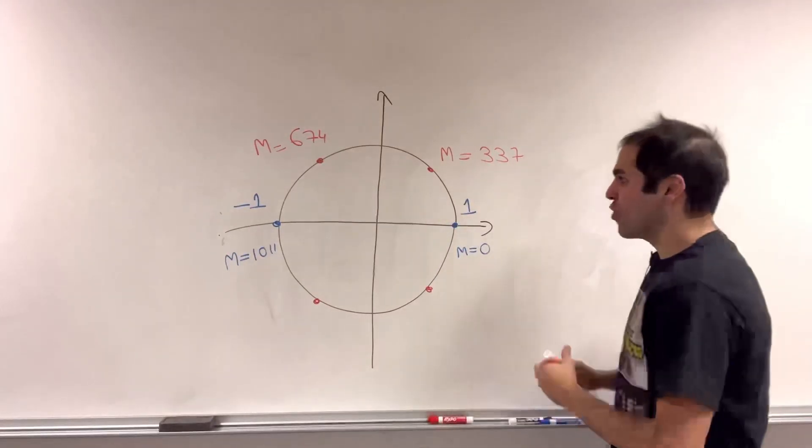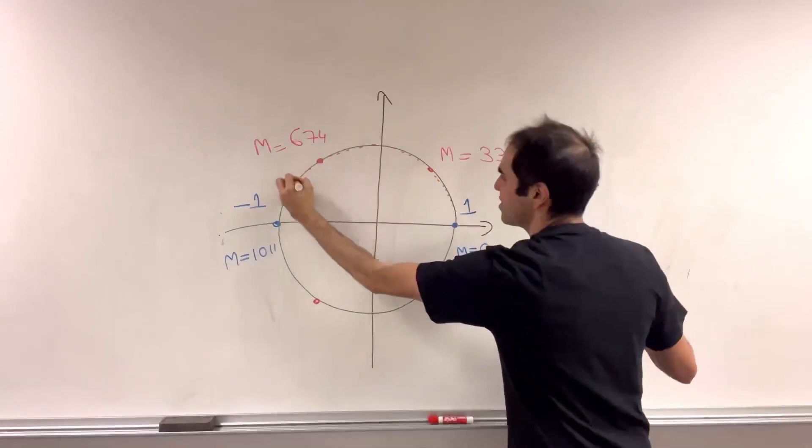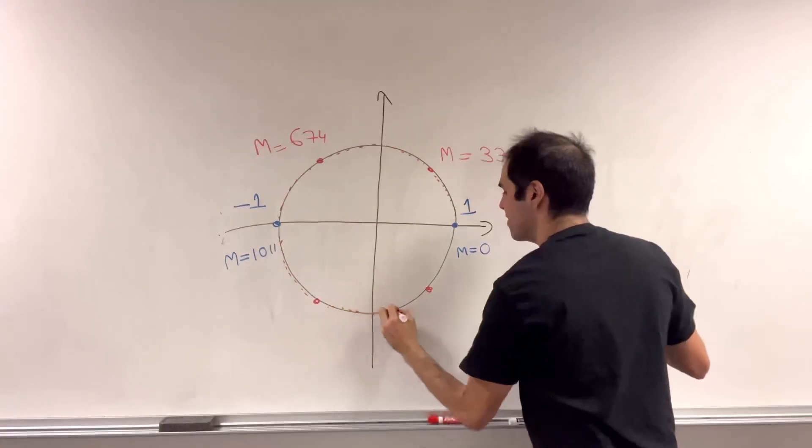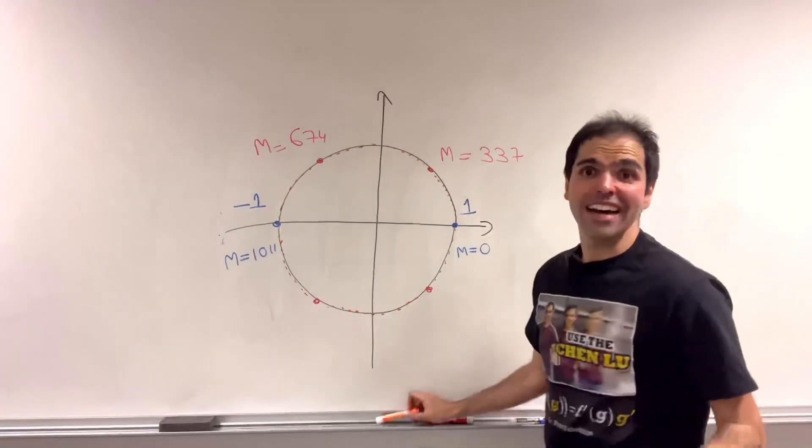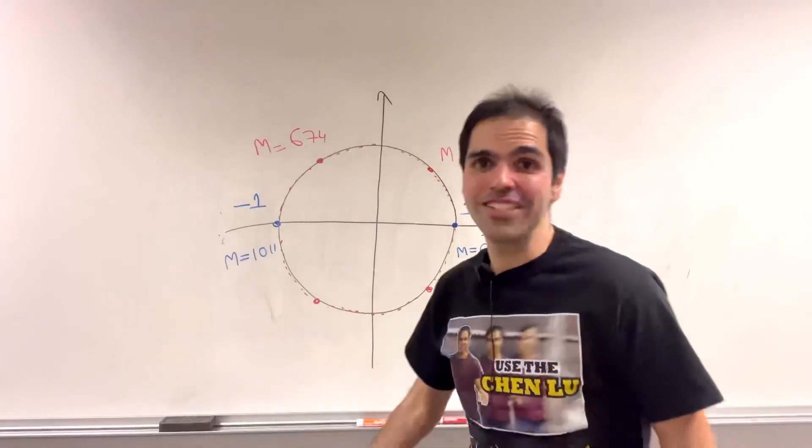And then, of course, you have the other roots, which are evenly spread out on the circle. And they all come from those other factors. How cool is that? So yeah, 2022 is a crazy year, and we just made it crazier.